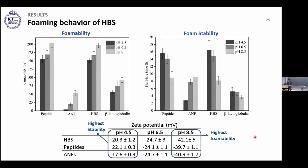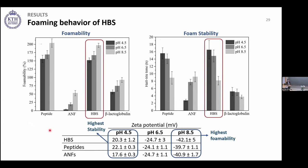pH has a significant effect on foaming properties: at higher pHs where components are highly charged, we get the highest foam ability, but to get the highest stability we need to decrease pH to lower values. Therefore, the best strategy is to make the foam at high pH for the lowest density, then gradually decrease pH to stabilize the foam. Since HBS and peptides had almost the same foam ability, we decided to work with HBS because it's simpler and doesn't require purification to obtain pure peptides.